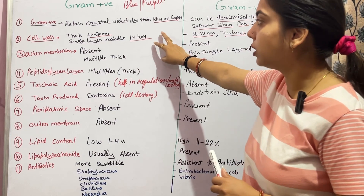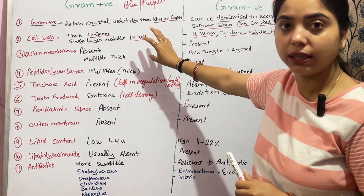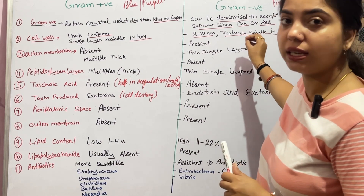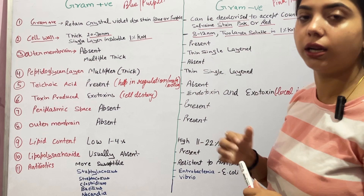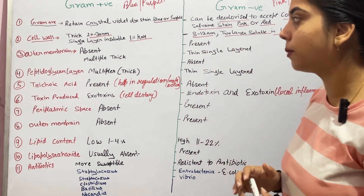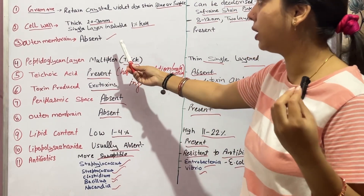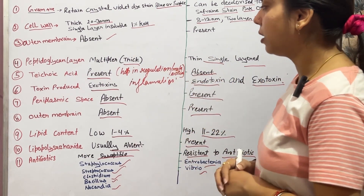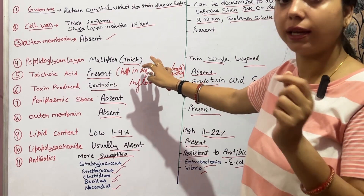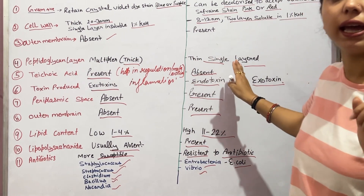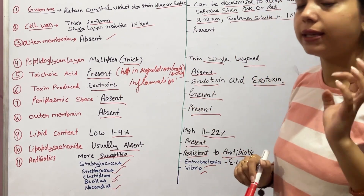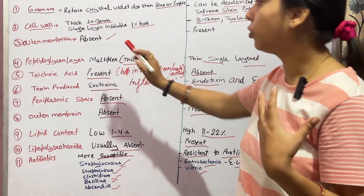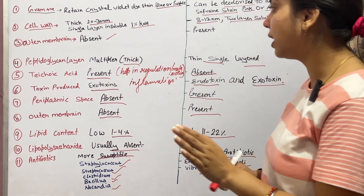Because the gram negative cell wall is very thin, the decolorizing agent is able to decolorize it. The outer membrane is absent in gram positive bacteria but present in gram negative bacteria. Regarding the peptidoglycan layer, it is thick in gram positive bacteria and present as a thin single layer in gram negative bacteria. The outer membrane is present in gram negative and absent in gram positive.